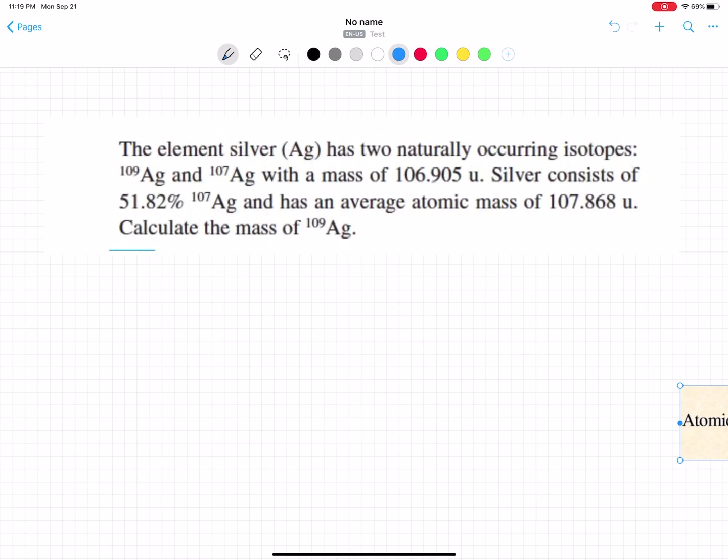We have two silvers. We need to look at what numbers are given. This is an important number - the average atomic mass of silver is 107.868 unified atomic mass units. So we have two isotopes: one of them is Ag-107, another isotope is Ag-109.